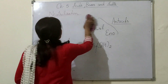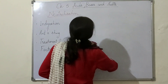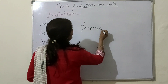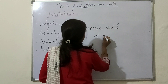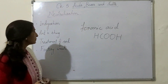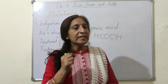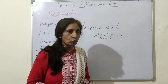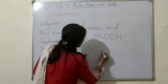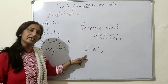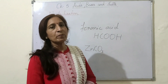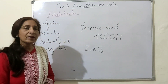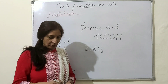Another application: ant sting contains formic acid (HCOOH). When an ant bites us, it injects formic acid into our skin and we feel pain. We need a base to neutralize it for relief. We can apply calamine lotion, which contains zinc carbonate — a basic salt — or wash with soap, which is also basic, or apply a paste of baking soda on the ant sting. That will also give relief through neutralization.